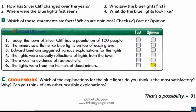Part C — group work: Which of the explanations for the blue lights do you think is the most satisfactory? Why? Can you think of any other possible explanations? Discuss this with your friends and tell the class your best explanation.